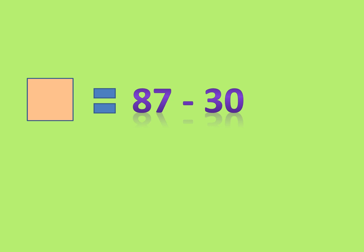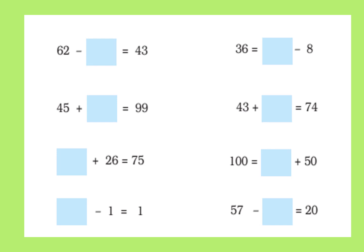For 87 minus 30, jump three rows down to reach 57. For 62 minus what number equals 43 — we subtract 43 from 62: jump 4 rows down and take 3 steps towards the left to reach 19. For 45 plus what equals 99, we add 54. For what plus 26 equals 75, subtract 26 from 75 to get 49.